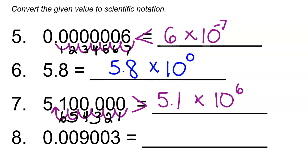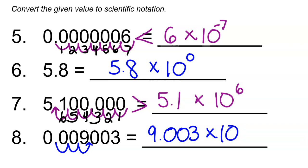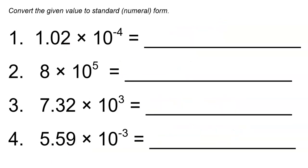Last but not least for this section: 0.009003. We move the decimal point to the right because we need our number to get bigger. Moving it gives us 9.003, which is indeed between 1 and 10. So we write 9.003 times 10 to some power — we moved the decimal point three times, so that's our power. Our original number is much less than 9.003, so our exponent should be negative: 9.003 times 10 to the negative 3rd.